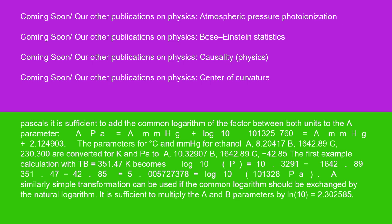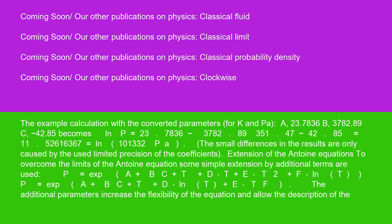A similarly simple transformation can be used if the common logarithm should be exchanged by the natural logarithm. It is sufficient to multiply the A and B parameters by ln(10) equals 2.302585. The example calculation with the converted parameters for K and PA: A, 23.7836, B, 3,782.89, C minus 42.85.